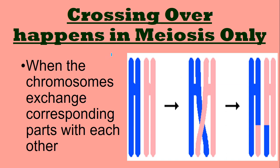One special thing that happens during meiosis is crossing over — it's when chromosomes exchange corresponding parts with each other. Here are two chromosomes that are alike. During a part of meiosis, they're right next to each other and sometimes their arms cross over. When that happens, they exchange genes of the same type — though they may be different versions, like one for blue eyes and one for brown eyes — so they end up with parts of each other.